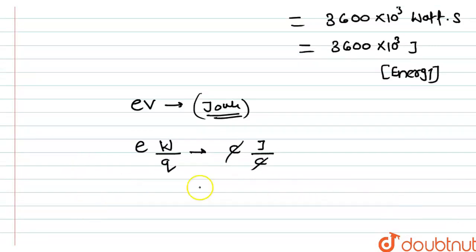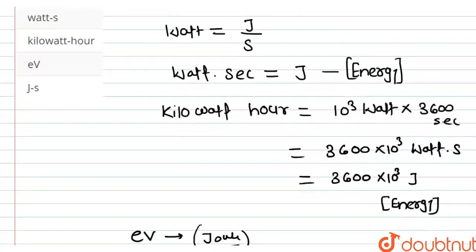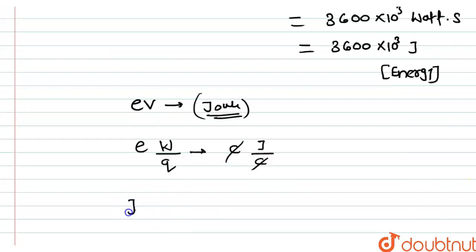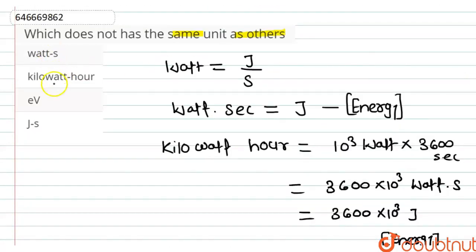But the fourth option is Joule second. Here Joule is the unit of energy and second is the unit of time. It means this unit is different from all other units because all these three units representing energy but Joule second is not representing energy.